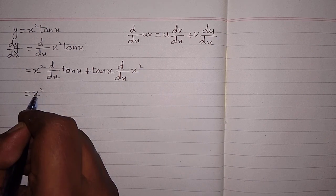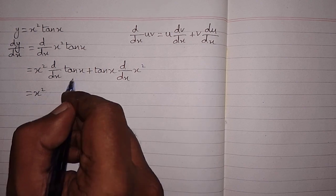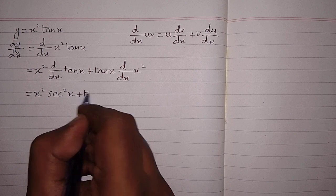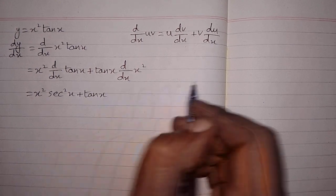Now first we will write x squared, then the derivative of tan x is sec squared x, plus tan x. And over here we can apply the power rule of differentiation.